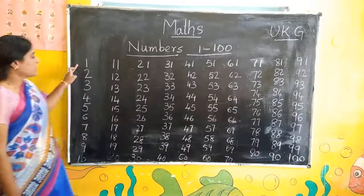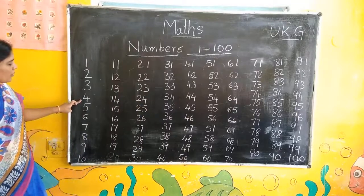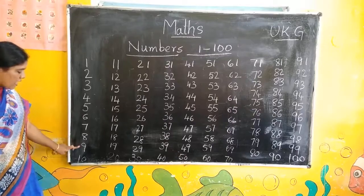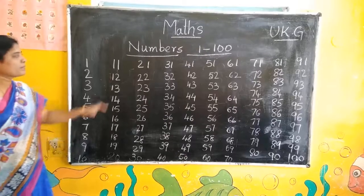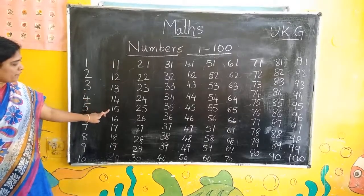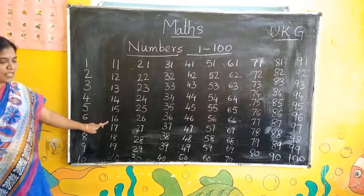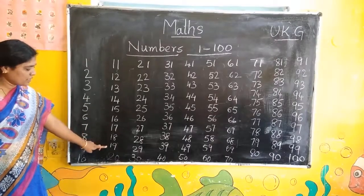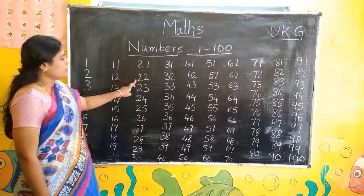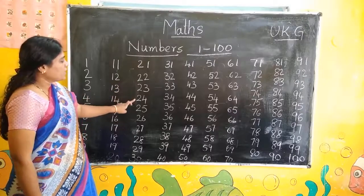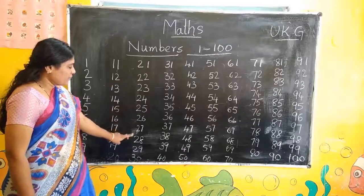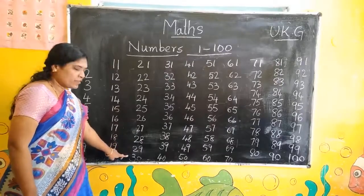1, 2, 3, 4, 5, 6, 7, 8, 9, 10, 11, 12, 13, 14, 15, 16, 17, 18, 19, 20, 21, 22, 23, 24, 25, 26, 27, 28, 29, 30.